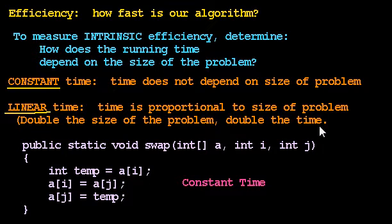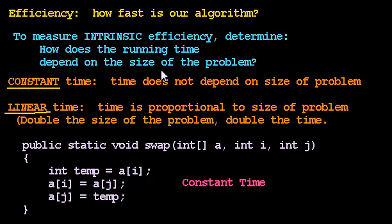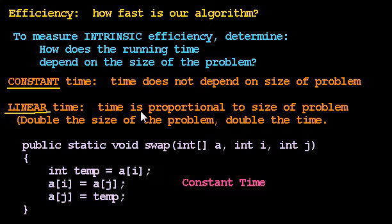Hello, my name is Dave, and I'm going to continue talking about how we determine how efficient an algorithm is — how intrinsically efficient it is — by determining how the time to run the algorithm depends on the size of the problem. So far, we've seen that the time might not depend on the size of the problem, which we call constant time, or the time might be roughly proportional to the size of the problem, which we call linear time.